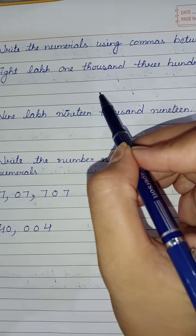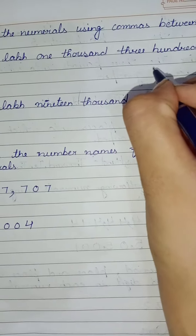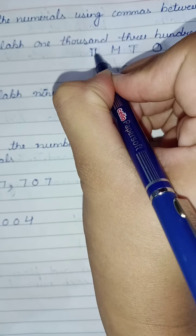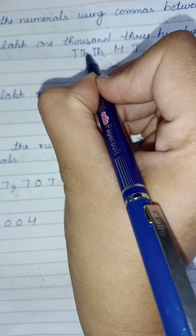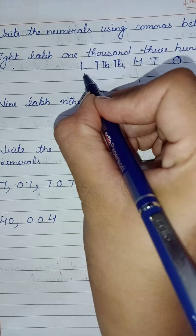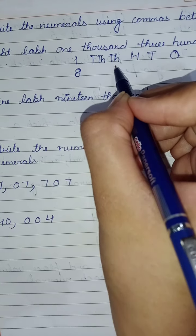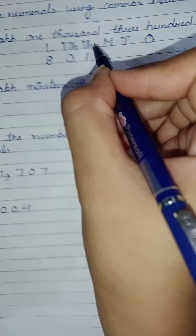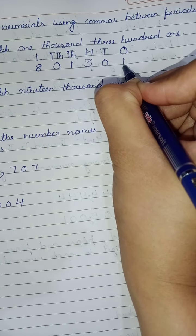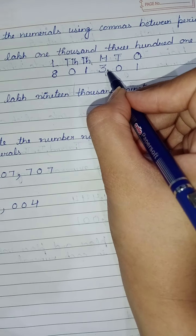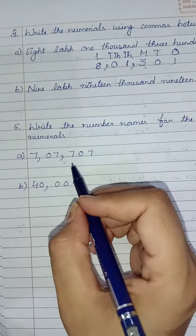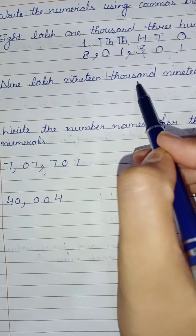Our number name is eight lakh one thousand three hundred one. How do we start? Start from ones: ones, tens, hundreds, thousands, ten thousands, lakhs. Now see: eight lakh means 8 in the lakh family. One thousand means 1 in the thousands place only. Ten thousands has nothing, so zero. Three hundred one means 3 in the hundreds family. One means 1 in the ones family. Tens family has no number, so zero. This is how we write this numeral. Now insert commas: one comma here after ones, tens, hundreds; and one comma here after thousands, ten thousands.